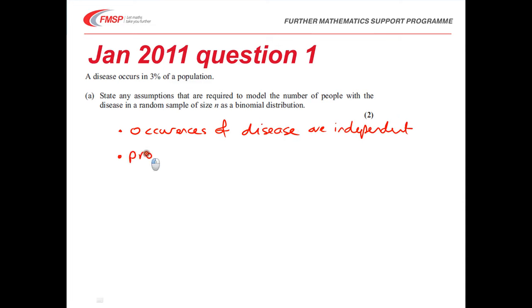And secondly, that the probability is constant. The probability of catching the disease is constant. Those two things are really quite important when we're discussing. And of course we're going to get a B mark for each of those.